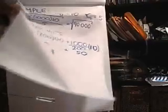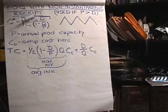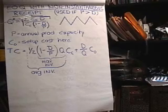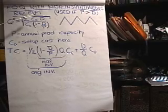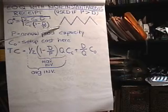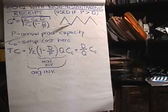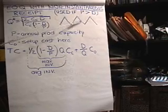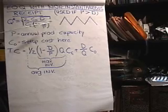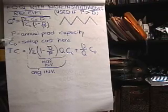The next model is the EOQ with non-instantaneous receipt. This is also known as the lot size production model. This is used if we're producing the stuff. Instead of the previous model where we assumed we were ordering from outside, now we're producing it, so it's coming in the door and going out at the same time. And then we stop production, produce something else on that line, and then it just goes out. So we have this jagged type relationship instead of what we had before where it came in all at once. You only use this model if P is greater than D, where P is your annual production capacity. That has to be greater than your annual demand.